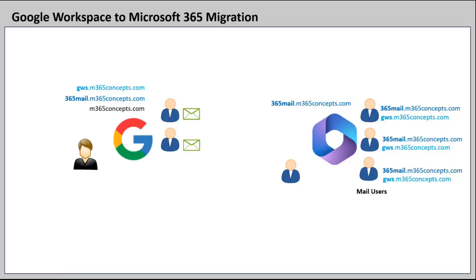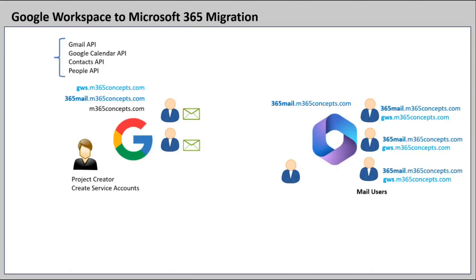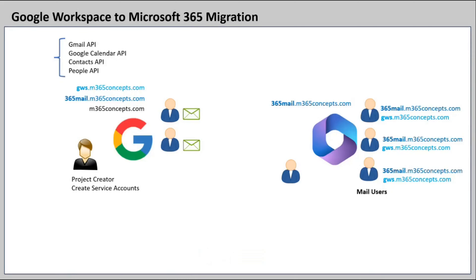The next prerequisite is we need to assign required permissions to the admin account of Google Workspace that we will use for the migration. This account needs two permissions: project creator and create service accounts. And the last prerequisite for this migration is we will enable a few APIs on Google Workspace like Gmail API, Google Calendar API, Contacts API, and People API. Let's move towards our lab and meet all these prerequisites one by one and migrate mailboxes from Google Workspace to Microsoft 365.